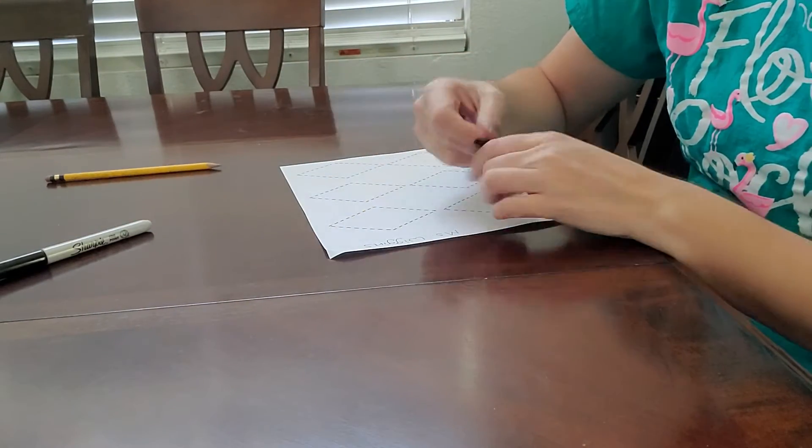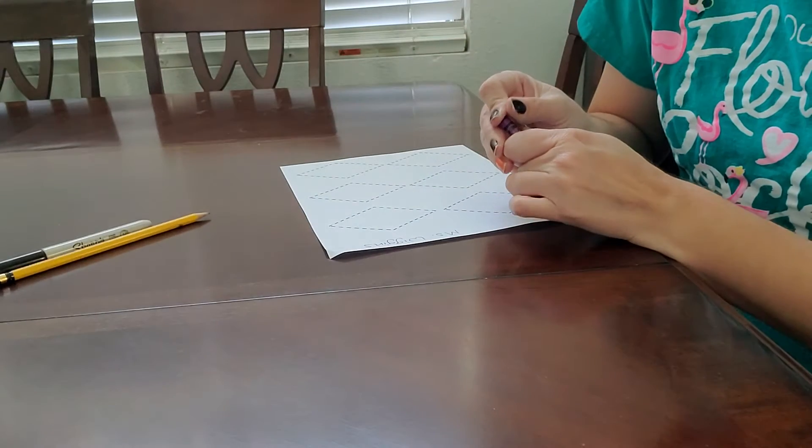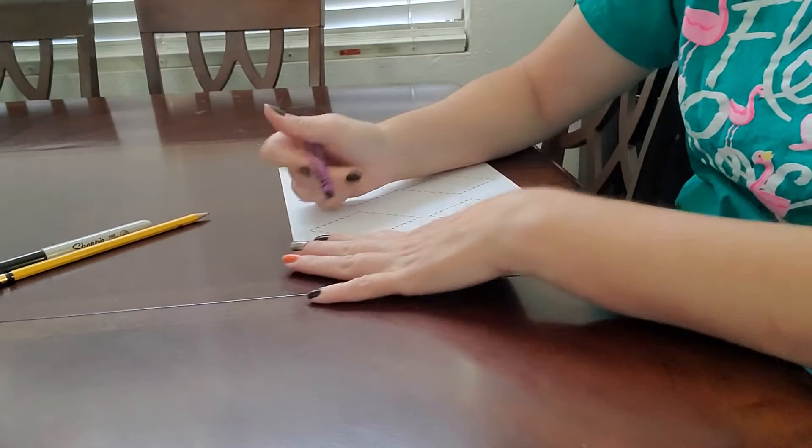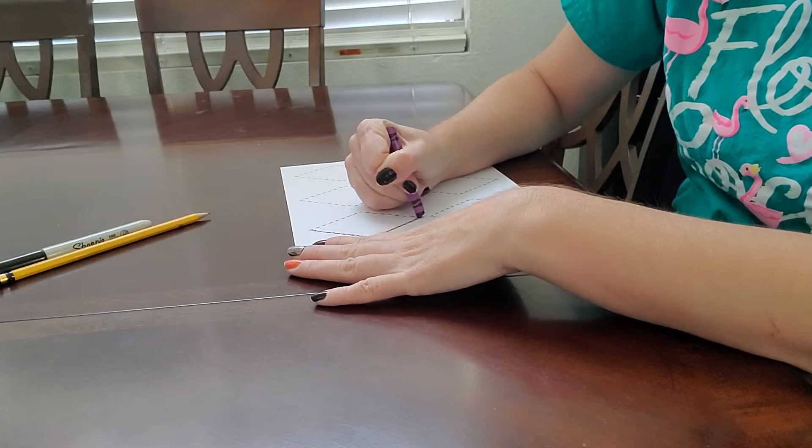So turn your paper sideways so that we can trace the diamonds on here, and just go right on the dotted line and trace them.